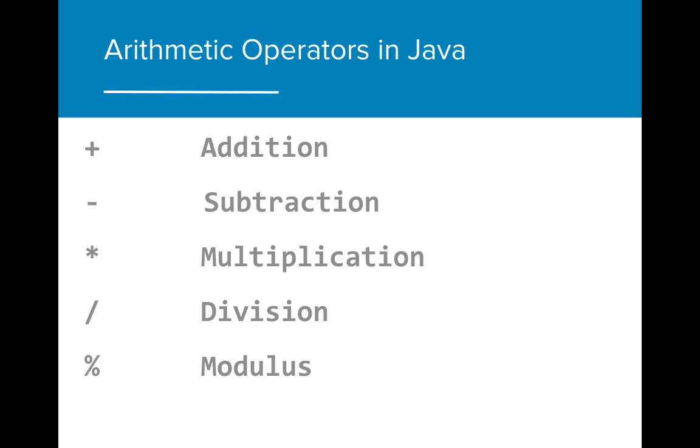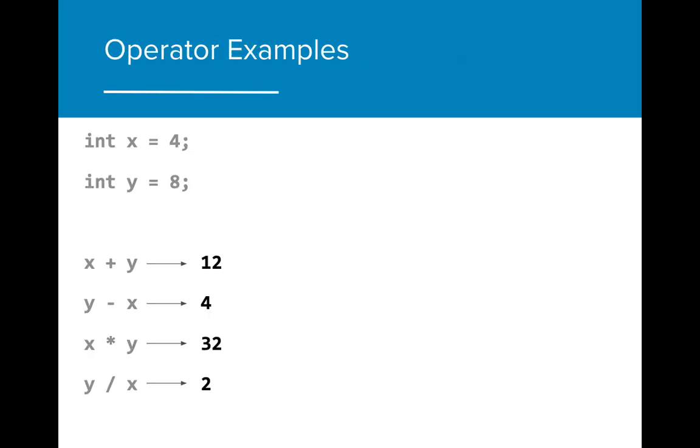Just like in regular mathematics, Java relies on many of the same operators to perform mathematical expressions. Here are some examples of variables being used in tandem with mathematical operators. In each case, the outcome is the expected result as with normal mathematical expressions.